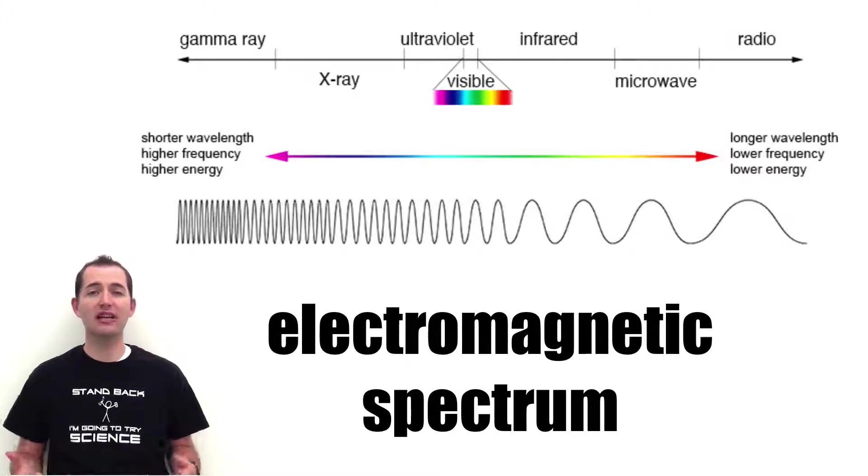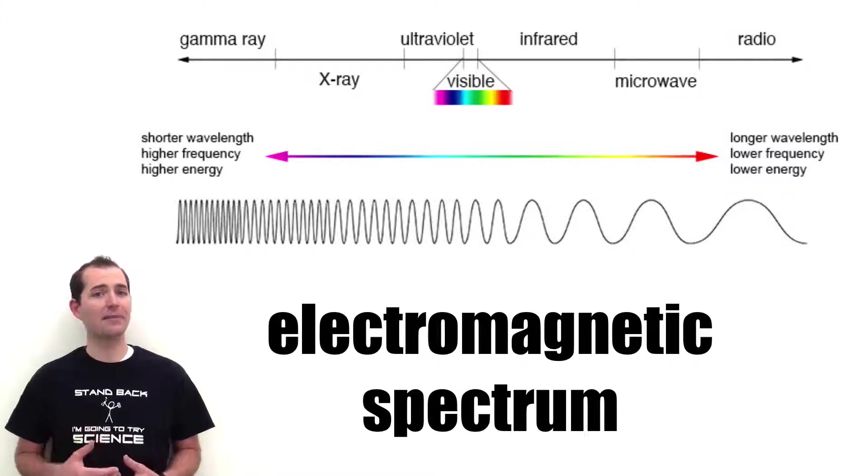The different types of electromagnetic waves are radio waves, microwaves, infrared, visible light, ultraviolet light, x-rays, and gamma rays.